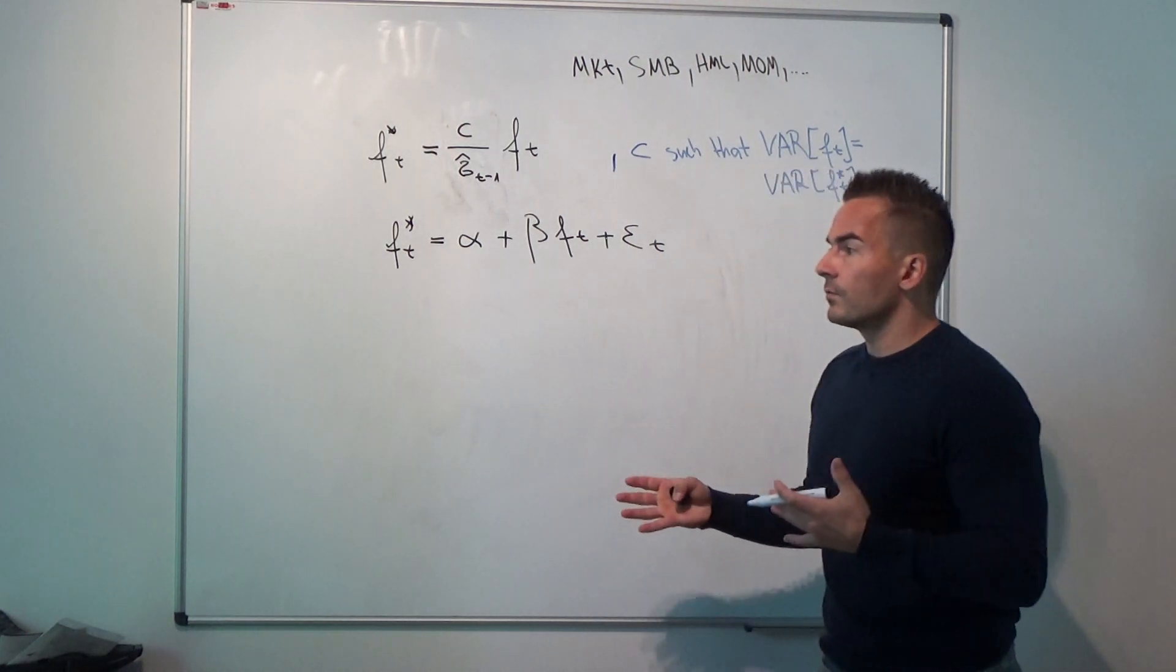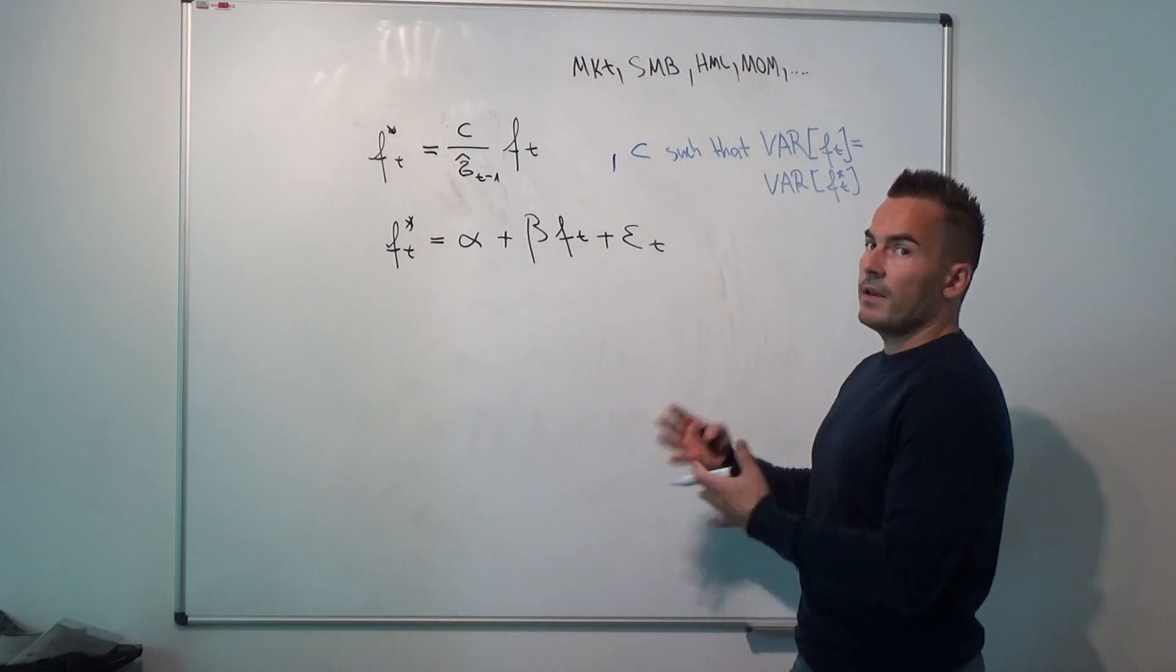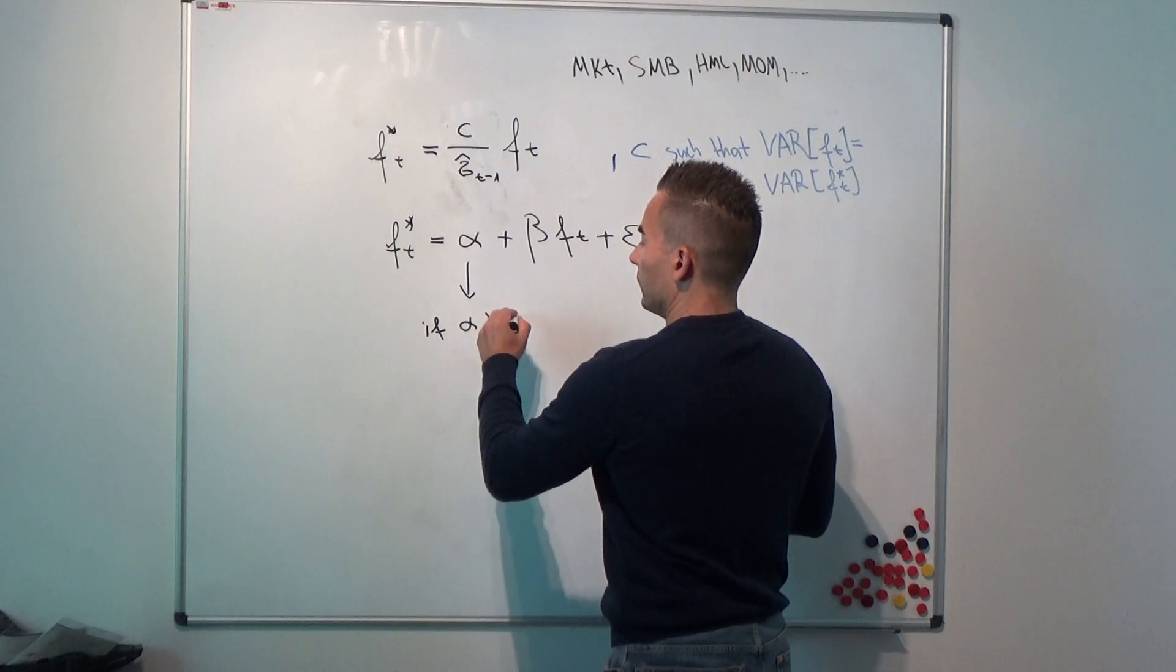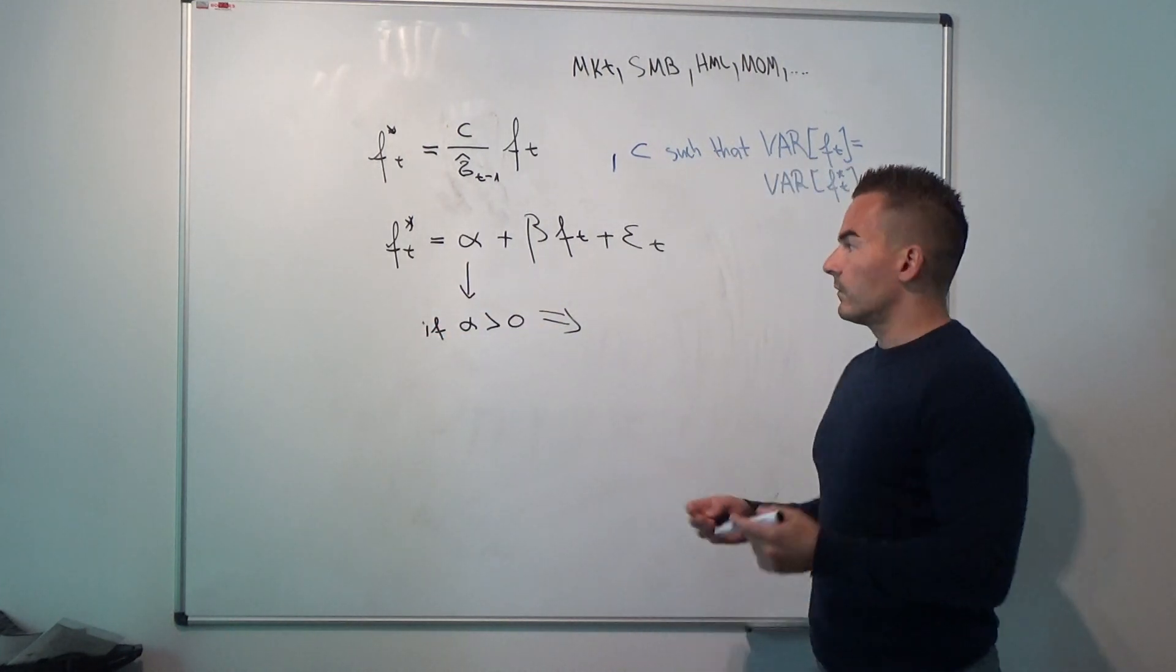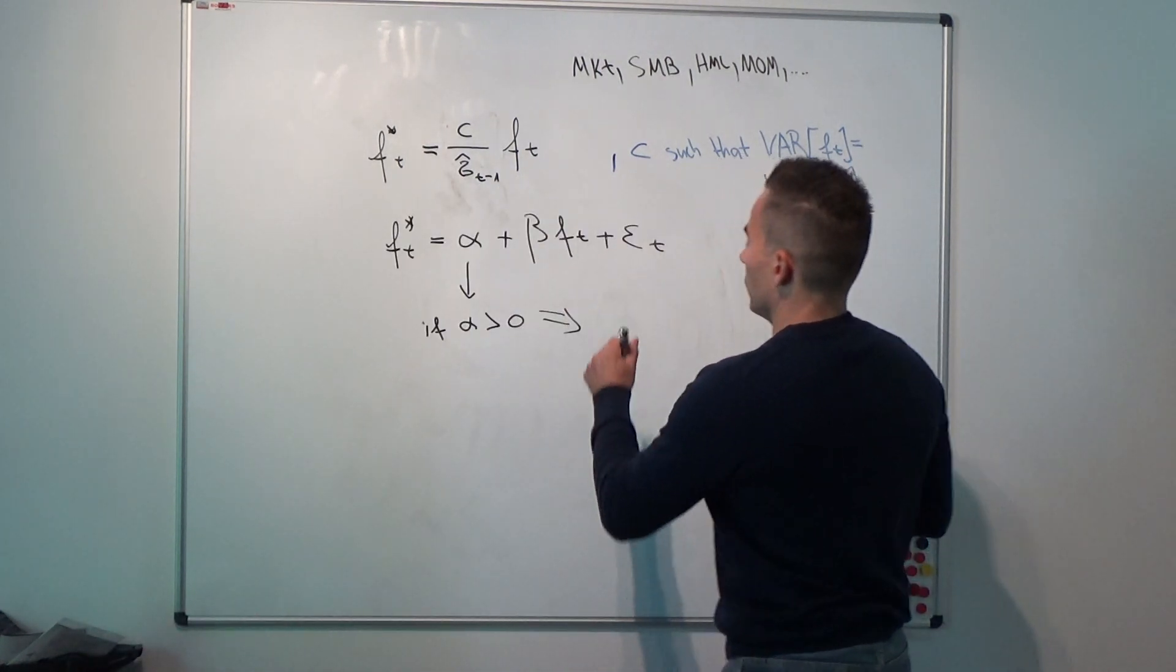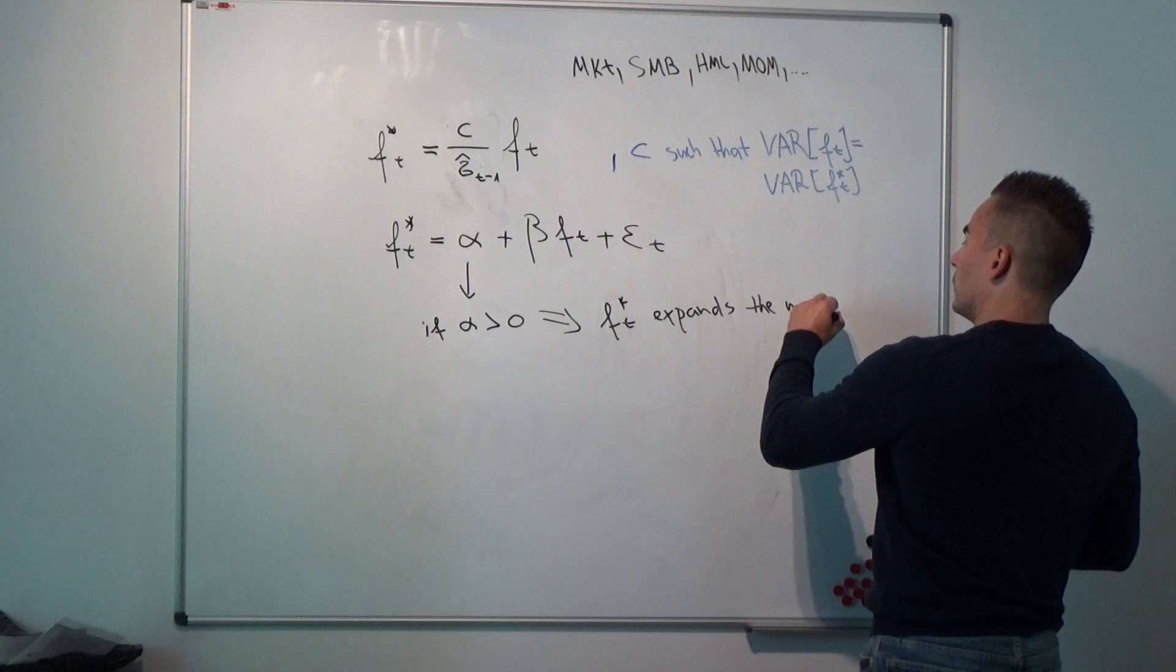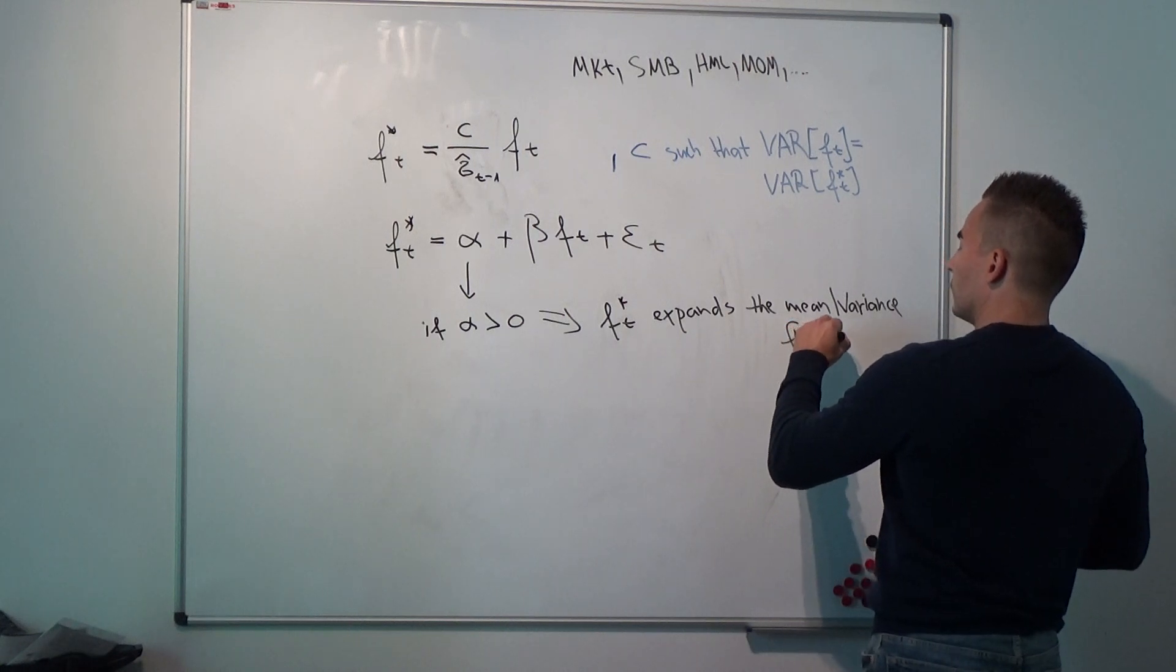It was basically a test of whether the maximum Sharpe ratio is expanded. So if the alpha here is positive, it follows that this factor here, the risk-managed factor, expands the mean-variance frontier.